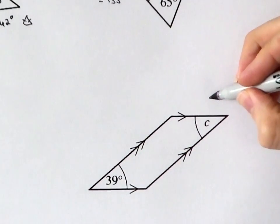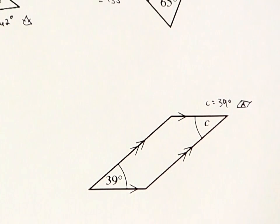And C must be 39 degrees, because opposite angles in a parallelogram are equal. See the small arrows that indicate parallel lines? All lines with the same number of arrows on them are parallel to each other.